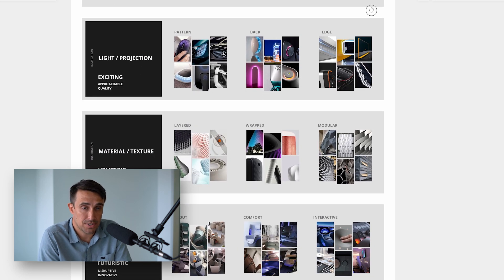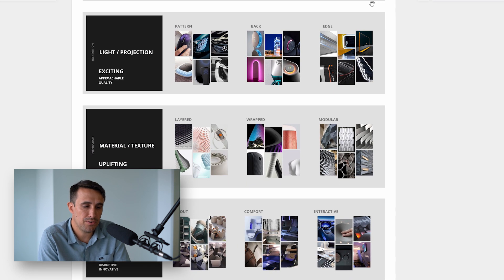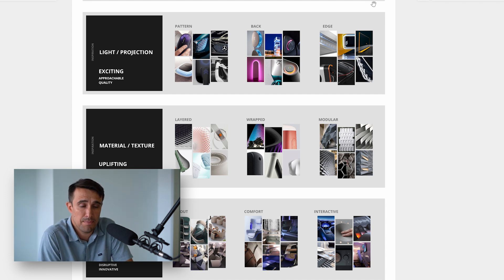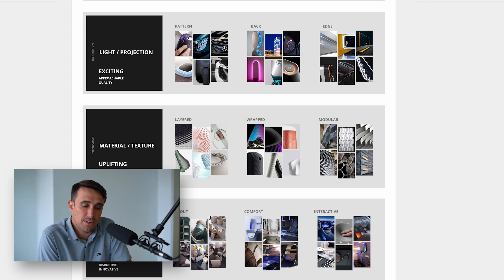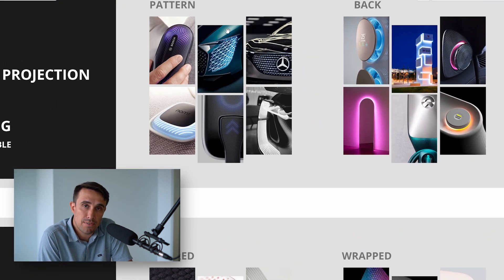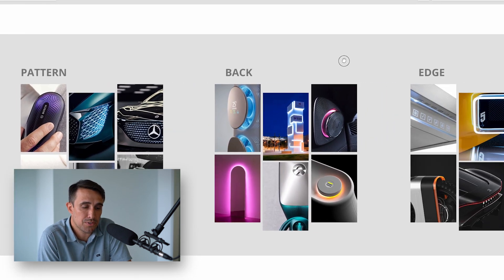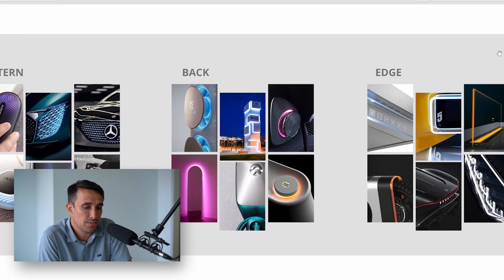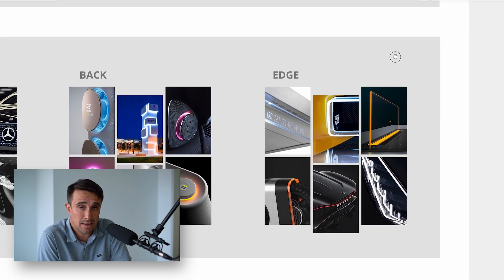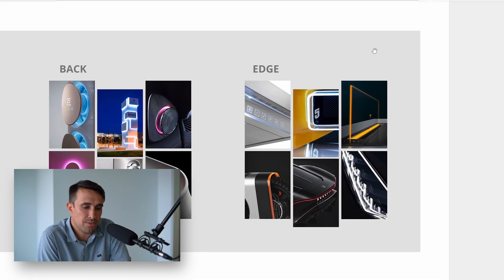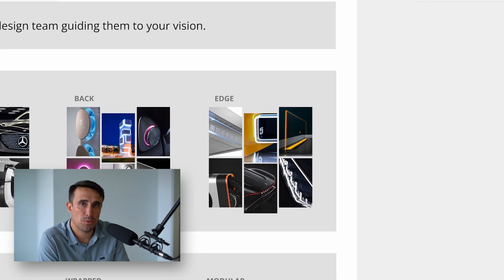Moving on to visual brand attributes — these will expand the brand vision and help to set the design direction. The goal is to find imagery that successfully communicates our verbal attributes. During this step, it is also important to give clients the opportunity to select elements they prefer within these categories. This helps to streamline the design process so designers can get a better understanding of the vision that words fail to convey.